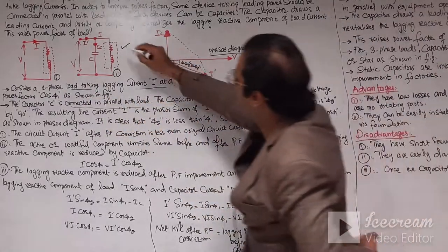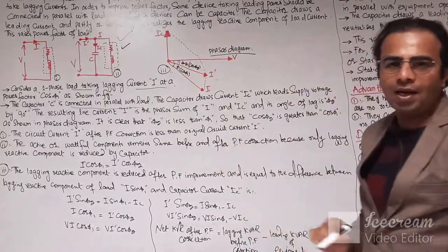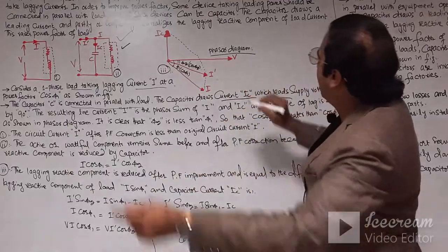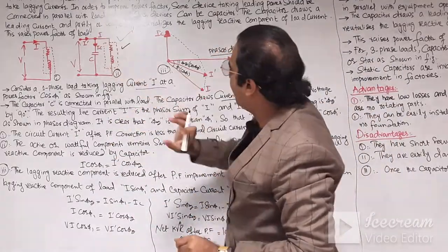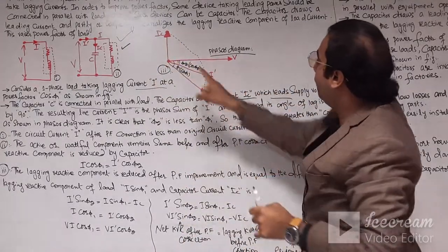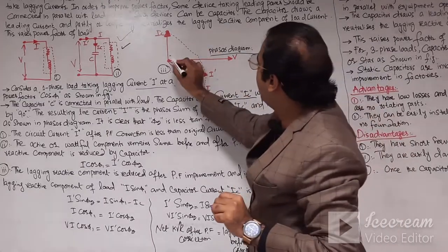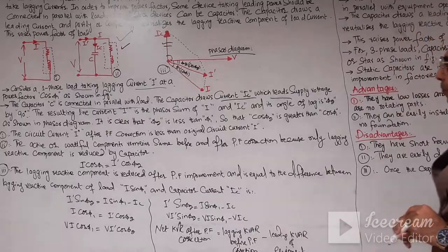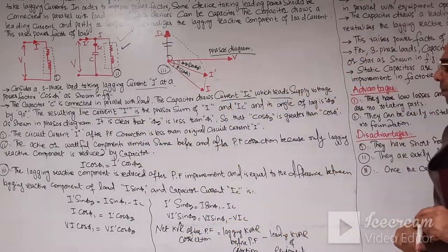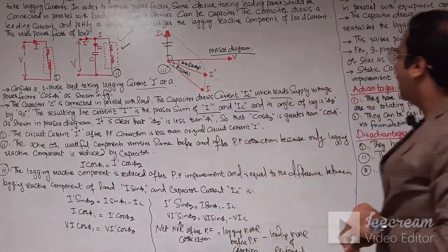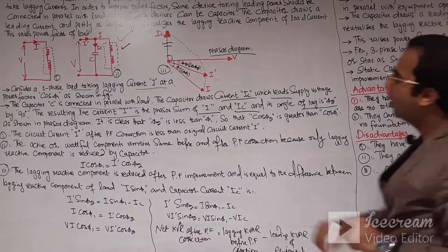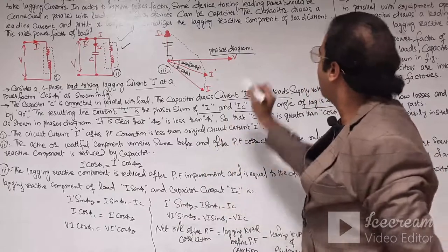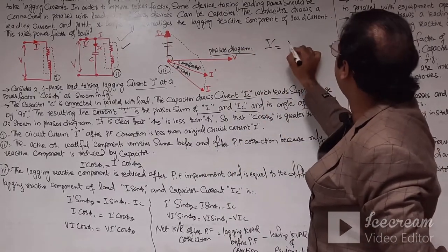In the phasor diagram, if we draw this phasor diagram of the inductive load, V is leading the current I at the angle phi 1 — meaning the current is lagged behind the voltage by angle phi 1. The capacitor C is connected in parallel across this load and draws the capacitor current IC which leads the supply voltage by 90 degrees. The resulting line current I dash is the phasor sum of I and IC, with the angle lagging behind by phi 2.